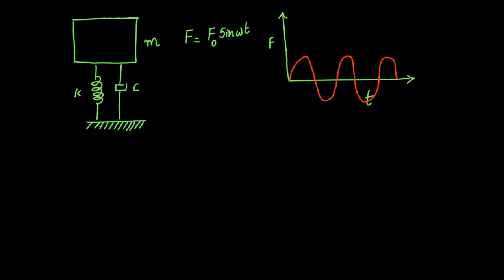One example where this type of force can occur: suppose there is a rotating part — it may be a motor with an eccentric mass that is rotating. The rotating object exerts a force radially outwards. The magnitude of the force is the centrifugal force, which can be written as mω²r. And you can resolve this force into two components, one along the x-axis and one along the y-axis.